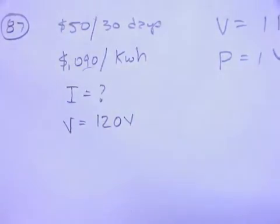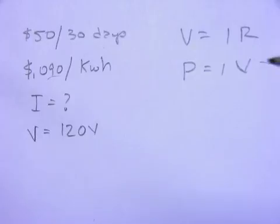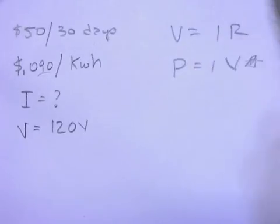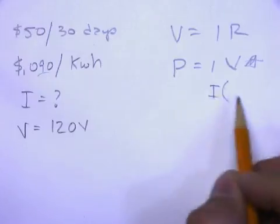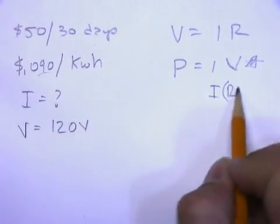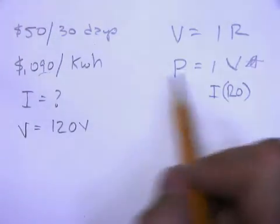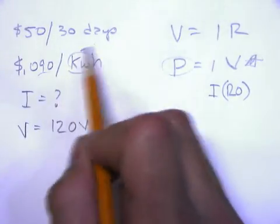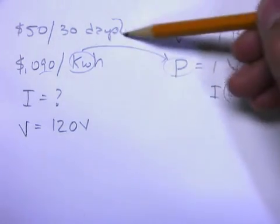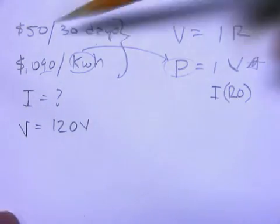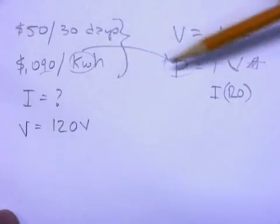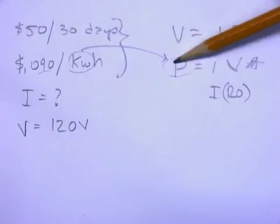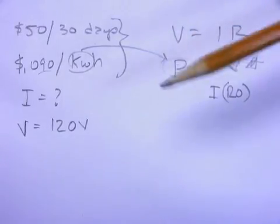I think I'm going to use this one. I think that's the one I'm going to aim at. Because I'm looking for I, and I know the voltage already is 120. So P, power, I got kilowatts right here. So if I can somehow synthesize this information into figuring out kilowatts or just watts, I got this problem licked.